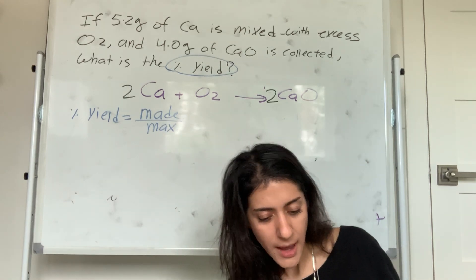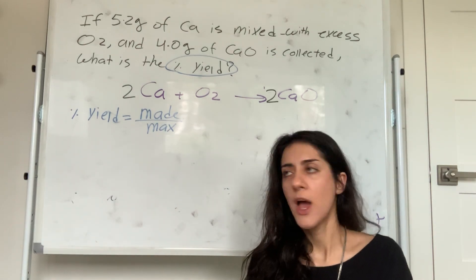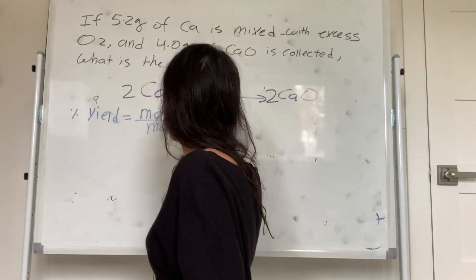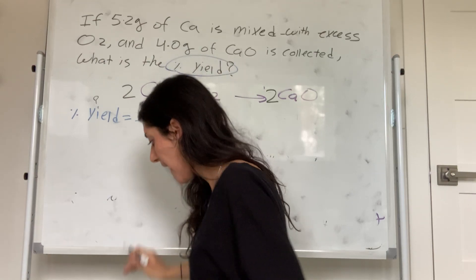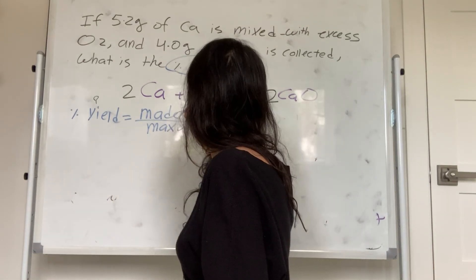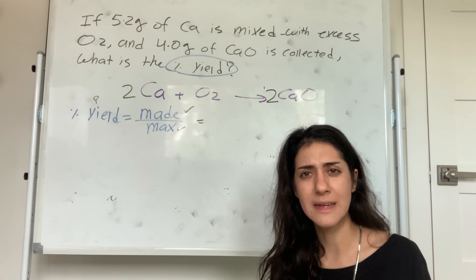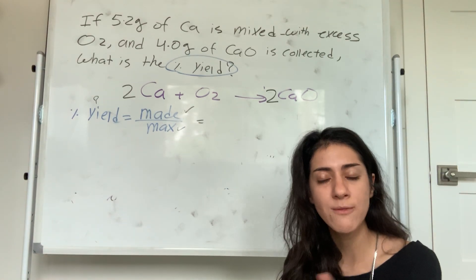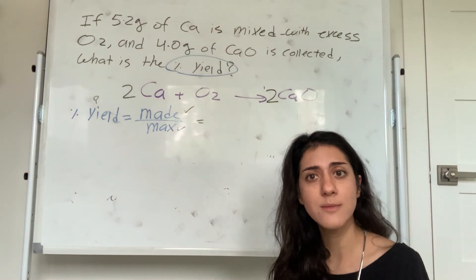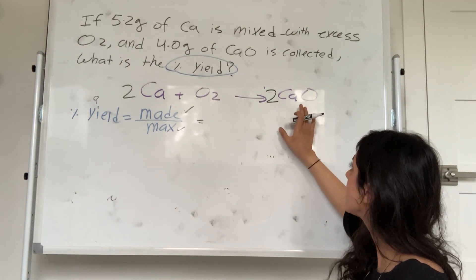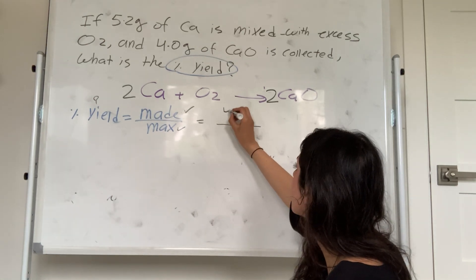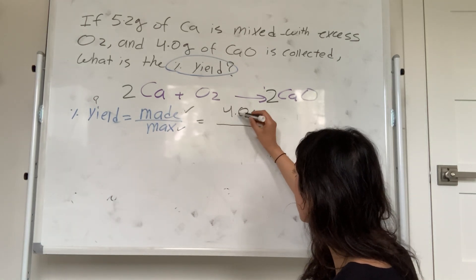I take calcium and add it to oxygen, mix them together, the reaction happens, and I form calcium oxide. I want to figure out what is the percent yield of calcium oxide. My product is calcium oxide and I made 4.0 grams. Now the question is: what was the max calcium oxide I could have made? It's a limiting reagent type of problem. The problem says 5.2 grams of calcium is mixed with excess O₂ — so O₂ is excess, which means my limiting reagent is calcium.